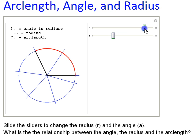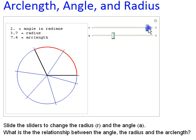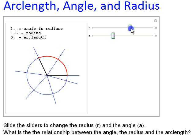What's the relationship you see between the angle, the radius, and the arc length? 2.5 radius. It looks like the arc length is always the product of the angle and the radius. Let's test that hypothesis.